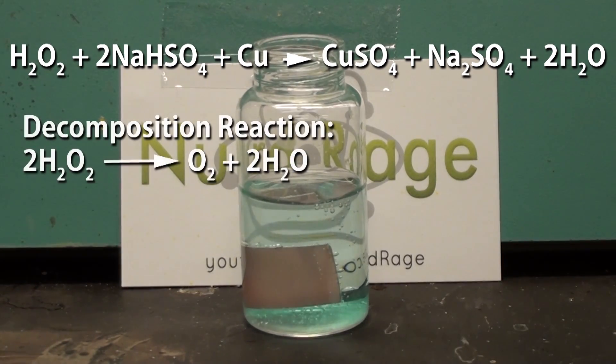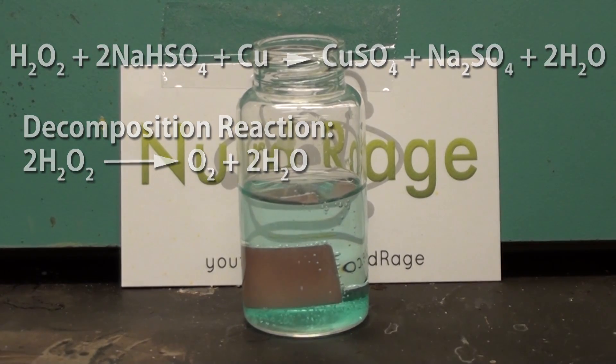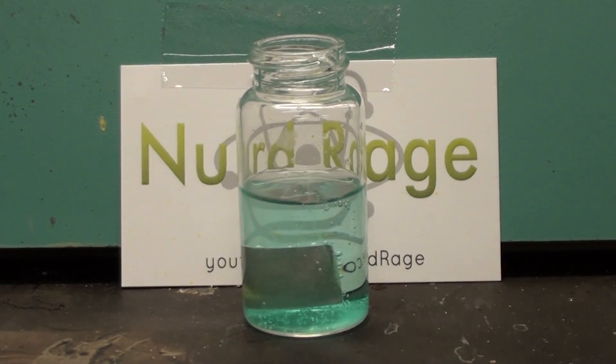Another disadvantage is that unused etchant also decays in storage. Nonetheless it's very easy to make. It can also be electrochemically recycled.